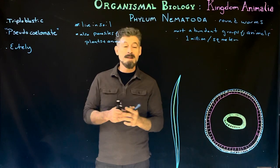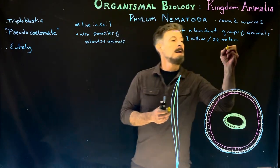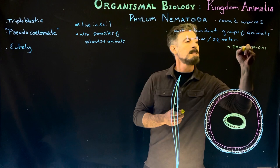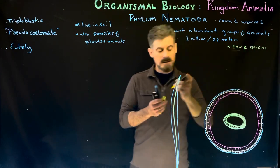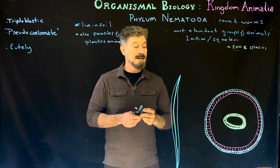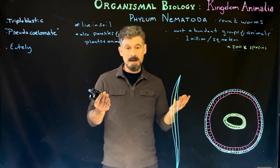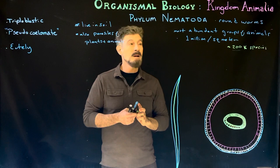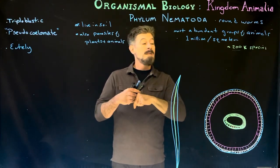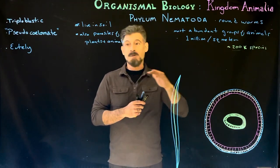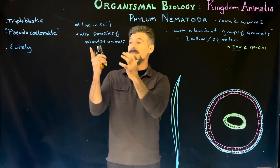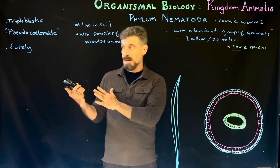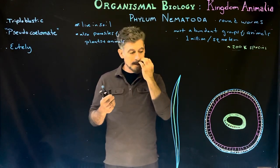They parasitize vertebrate and invertebrate animals as well as plants, while many of them live freely in the soil. There are about 200,000 species described roughly, but it's estimated that 20 times more potentially exist undescribed — so probably millions of different species of nematodes are unknown. So: a lot of species, an extremely abundant group, very important for soil nutrient cycling, and also medically significant as parasites. Our focus now is going to be just on structure.